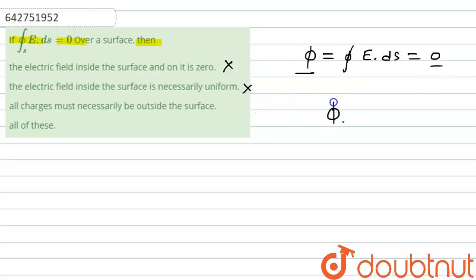And as we know that phi is equal to q by epsilon naught and which is equal to 0, so q inside is 0. So the electric charge inside the surface will be 0. So all the charge must necessarily be outside the surface. Option C is correct.